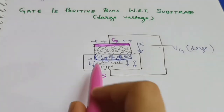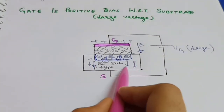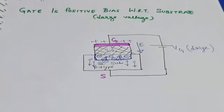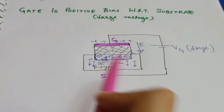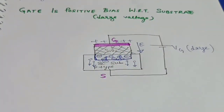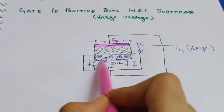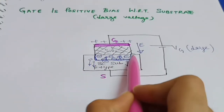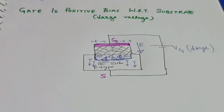Since the bulk or semiconductor substrate is p-type, but the inversion layer at the interface has now become n-type. Since no current is passing through the MOS capacitor, it is under equilibrium condition.